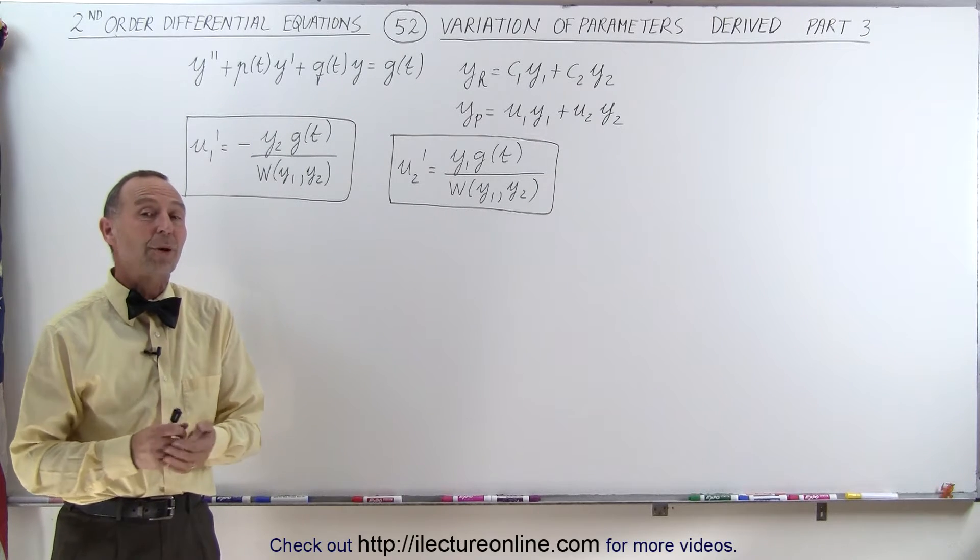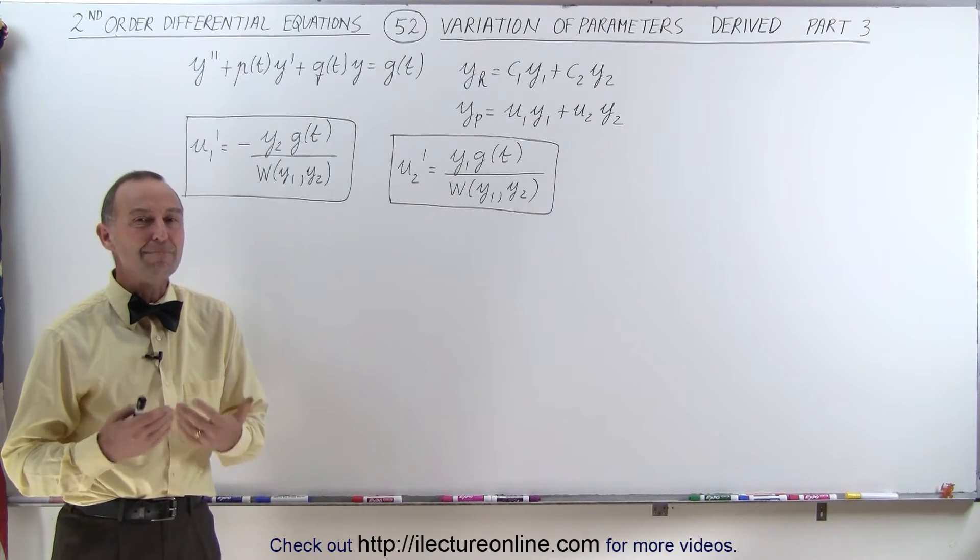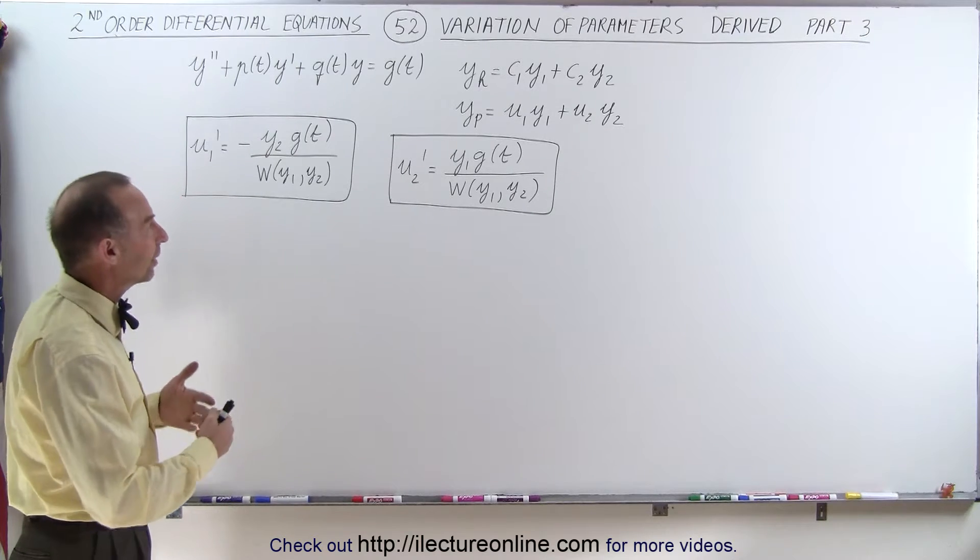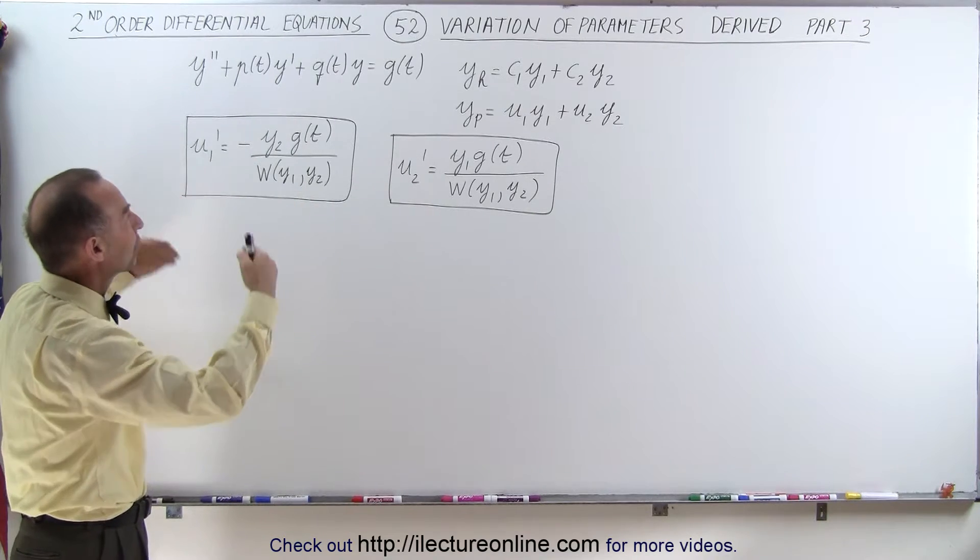Welcome to iLectureOnline. Here's part 3 of how to come up with the method of variation of parameters, at least showing you how it's derived.